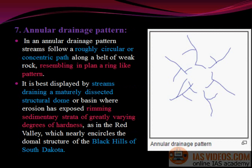Annular drainage pattern: In an annular drainage pattern, streams follow a roughly circular or concentric path along a belt of weak rock, resembling a planar ring-like pattern. It is best displayed by streams draining a maturely dissected structural dome or basin, where erosion has exposed trimming sedimentary strata of greatly varying degrees of hardness, as in the Red Valley, which nearly encircles the domal structure of the Black Hills of South Dakota.